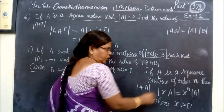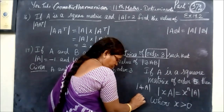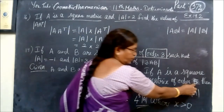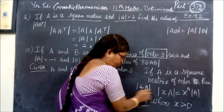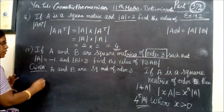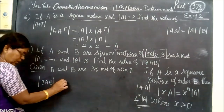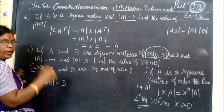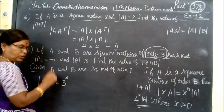Again, if the order is supposed to be 5, using this property, here you are writing 3AB. So, this is 3.